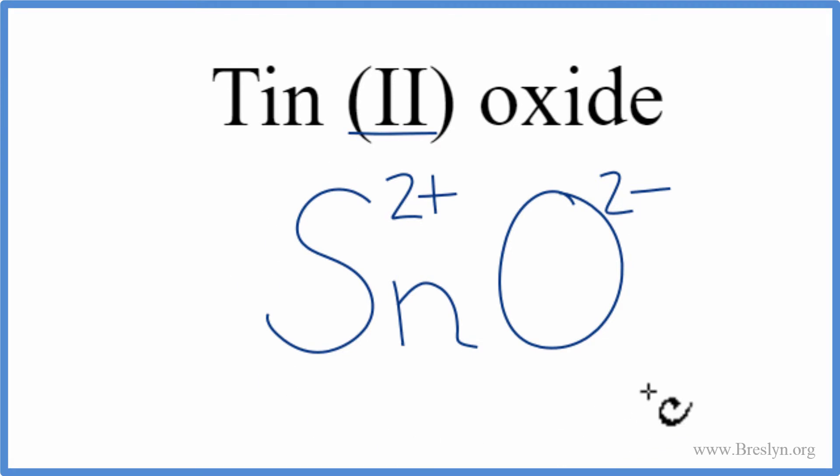For an ionic compound, the charges should add up to zero, giving us a net charge of zero. 2+ and 2- gives us zero, so this is the formula for Tin (II) oxide.